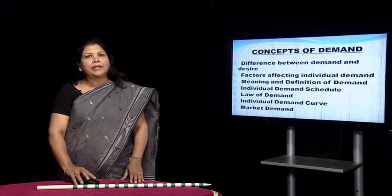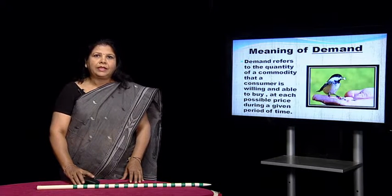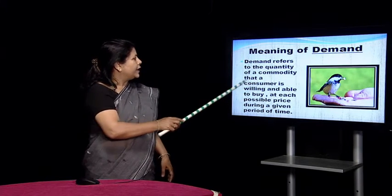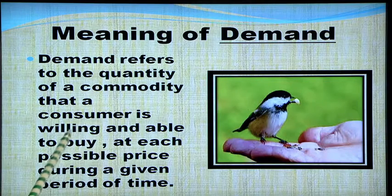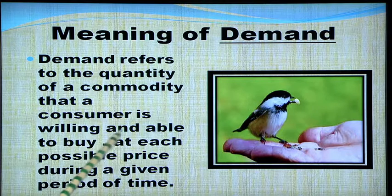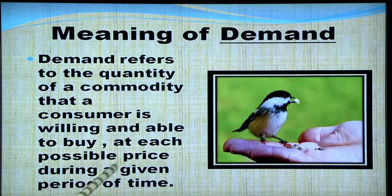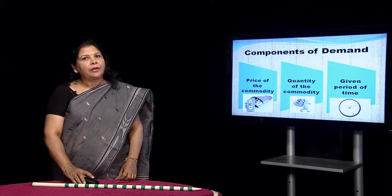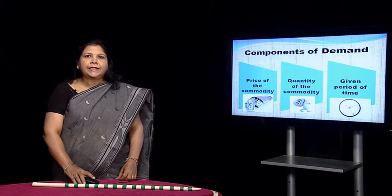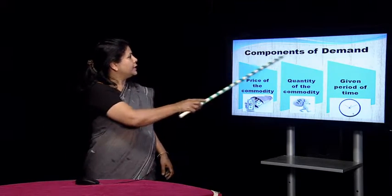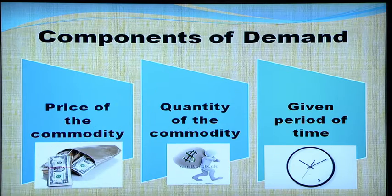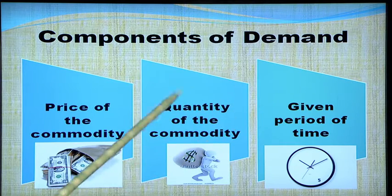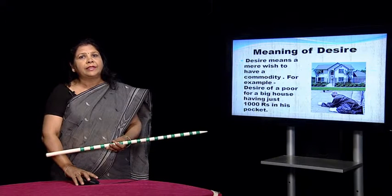Let us begin by understanding the meaning of demand. Demand refers to the quantity of a commodity that a consumer is willing and able to buy at each possible price during a given period of time. It is important to understand the components of demand. The components of demand are price of the commodity, the quantity of the commodity, and the given period of time for which the quantity is demanded.